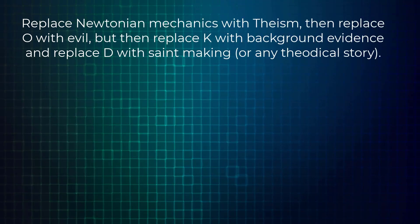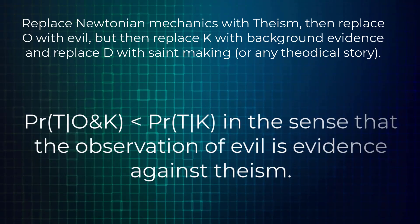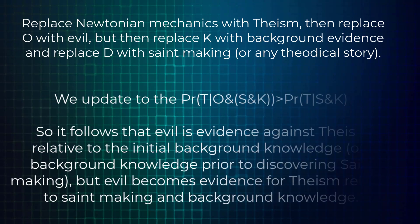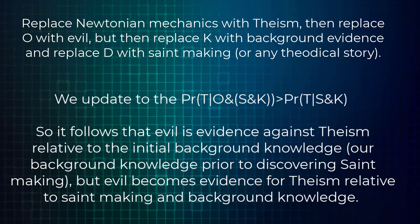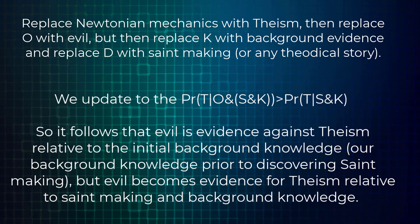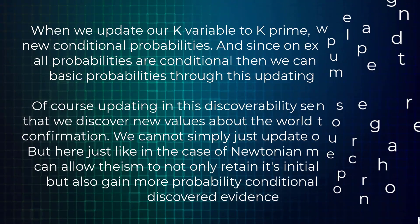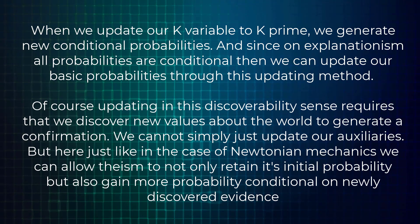Let's use the problem of evil as an example. Replace Newtonian mechanics with theism, O with evil, K with background evidence, and D with saint-making. So plausibly, the probability of T conditional on O and K is less than T conditional on K — in the sense that the observation of evil is evidence against theism. But then we discover saint-making, and thus we update to: the probability of T conditional on O, S, and K is greater than T conditional on S and K. So it follows that evil is evidence against theism relative to initial background knowledge, but evil becomes evidence for theism relative to saint-making and background knowledge. When we update our K variable to K-prime, we generate new conditional probabilities, and since on explanationism all probabilities are conditional, we can update our basic probabilities through this updating method.